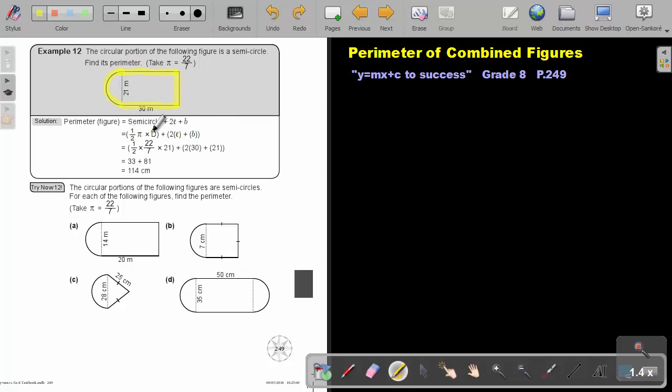So it will be two lengths plus a breath. So if I find the semicircle, it's half pi times the diameter. So half take pi as 22 over 7, times the diameter, and then two lengths, which is 30, plus that breath, which is 21.